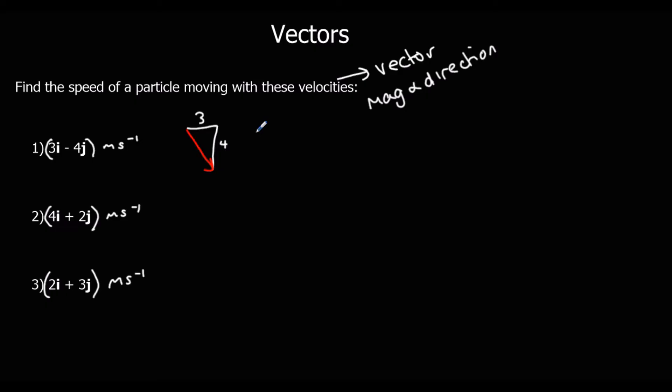But if we're converting it into a speed, we just want to know how far is it going, how long is the red line. We don't care about what direction it's going in, we just want to know how fast it's going in meters per second. So we only want a magnitude.